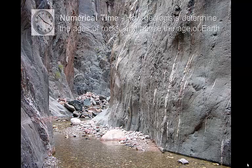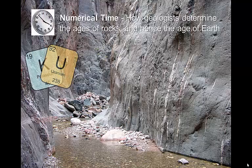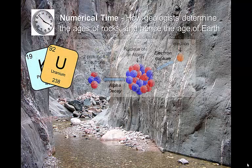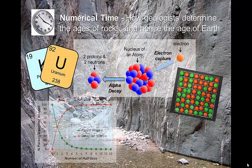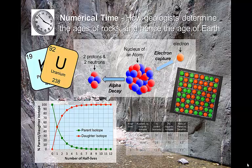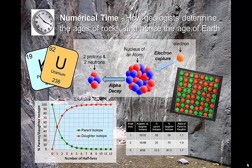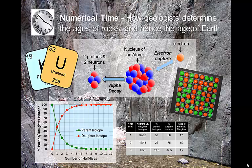So hopefully you leave this lesson with a stronger understanding of the processes geologists use to figure out the numerical ages of rocks, and thus establish when different events occurred in Earth's long history. We have three learning objectives for this lesson — how confident are you that you can successfully complete each of these tasks?